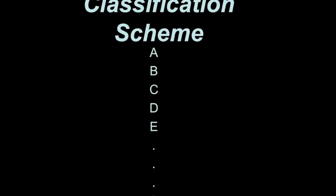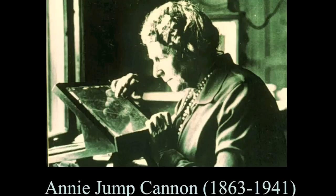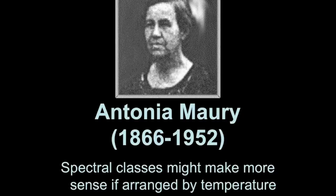And then later on, a couple female astronomers, particularly Annie Jump Cannon and Antonia Mari, decided to get rid of most of the letters, subsume them into only seven letters within the previous classification scheme, and then reorder the letters according to the temperature of the stars.